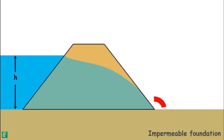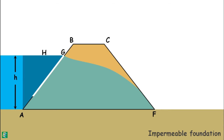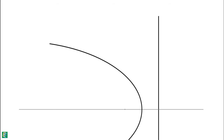To draw the base parabola, we take the downstream point of the dam as the focus F of the parabola, which is also its origin. Casagrande also recommends that the seepage parabola starts from a point H on the upstream face. If we take the horizontal projection of the wet upstream face of the dam on the water surface as GI, then the distance GH from point G on the face of the dam is given as 0.3 times GI. We can then obtain the parabola's directrix using the parabola property.